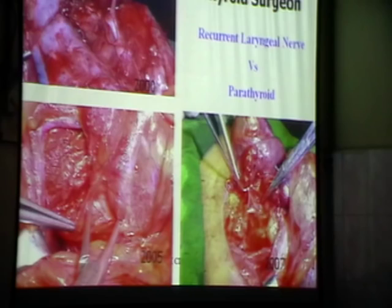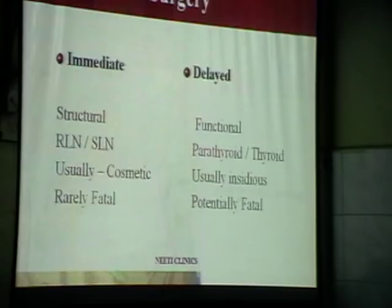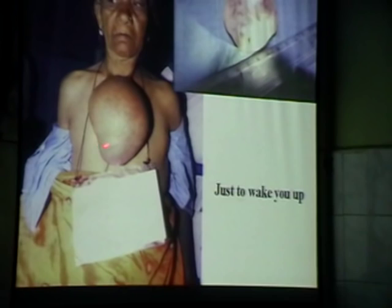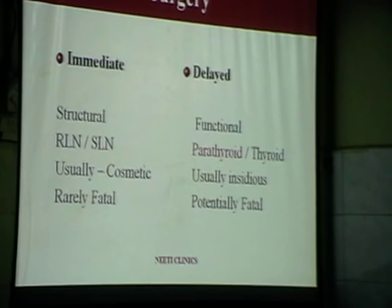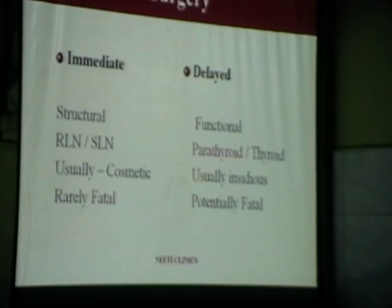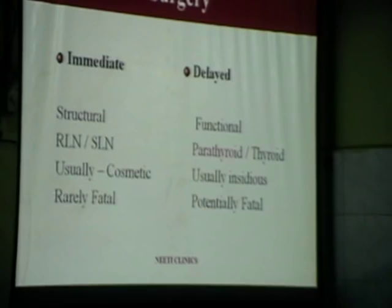This is a parathyroid cyst which was removed in one of the camps. Now, surgical morbidities in thyroid surgery - immediately it can have structural problems of damaging the recurrent or superior laryngeal nerve. They are usually extremely rare cosmetically, but at the same time may have to say that they are very rarely fatal. Even if you cut the recurrent nerve, the patient still goes on.